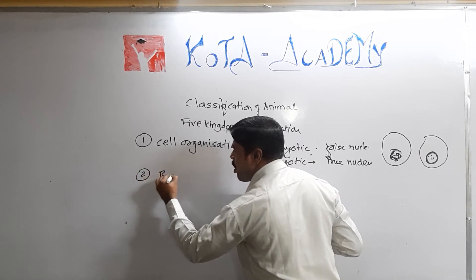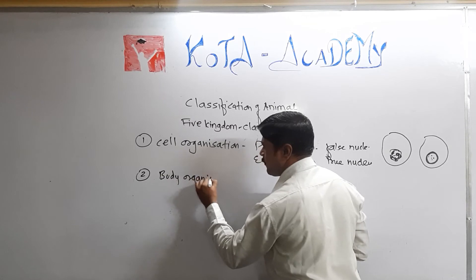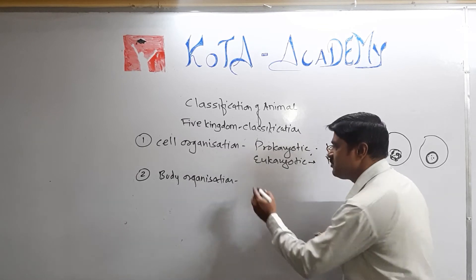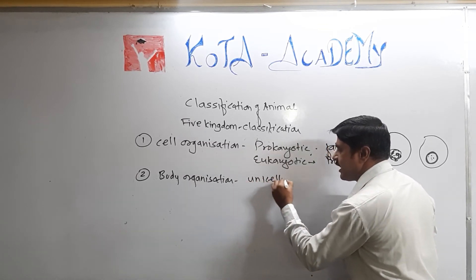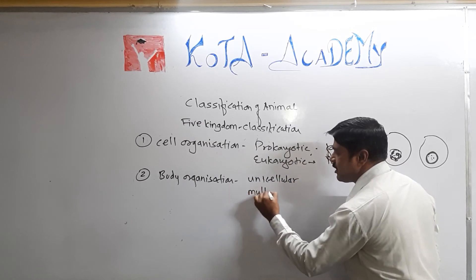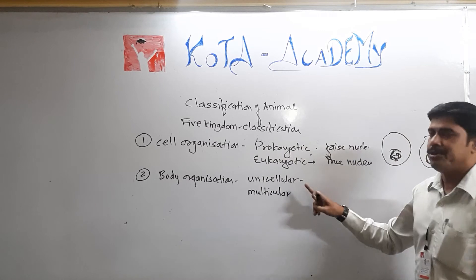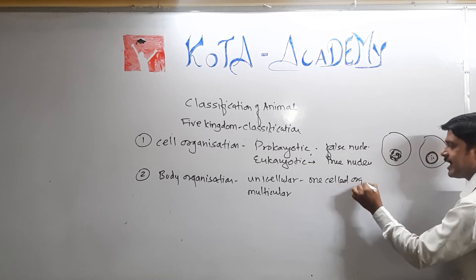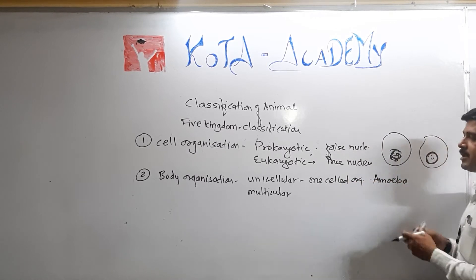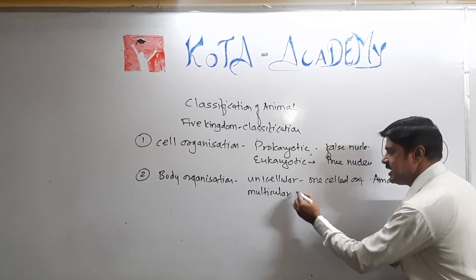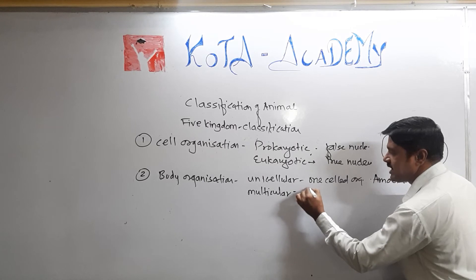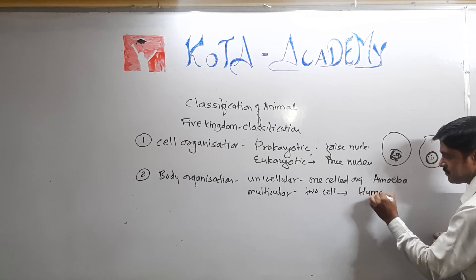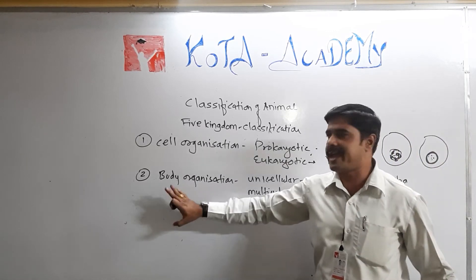The second criteria is body organization — whether the organisms are unicellular or multicellular. Unicellular organism means a one-cell organism, like Amoeba. Multicellular organism means it has more than two cells, for example, the human being.